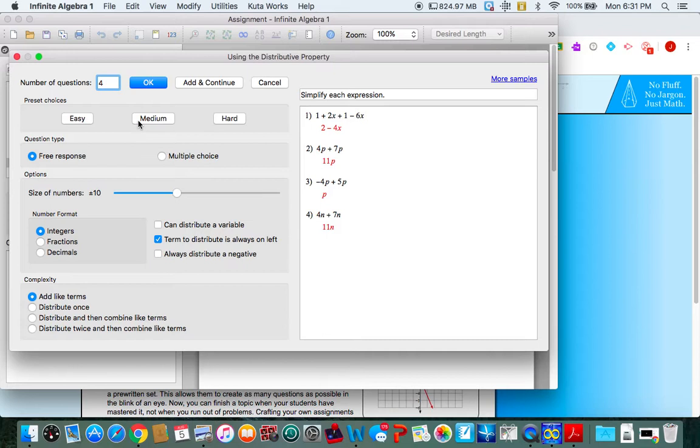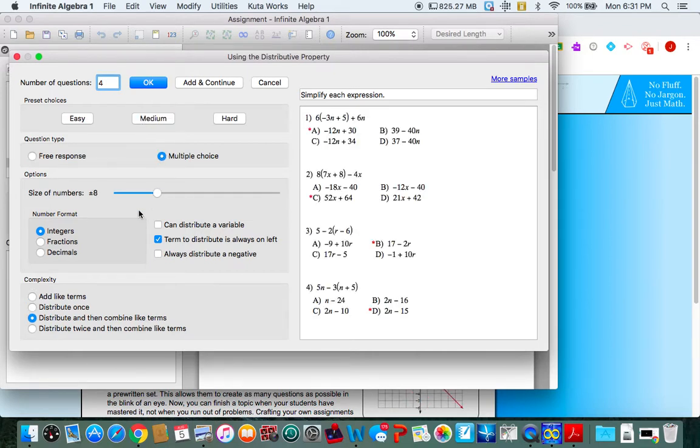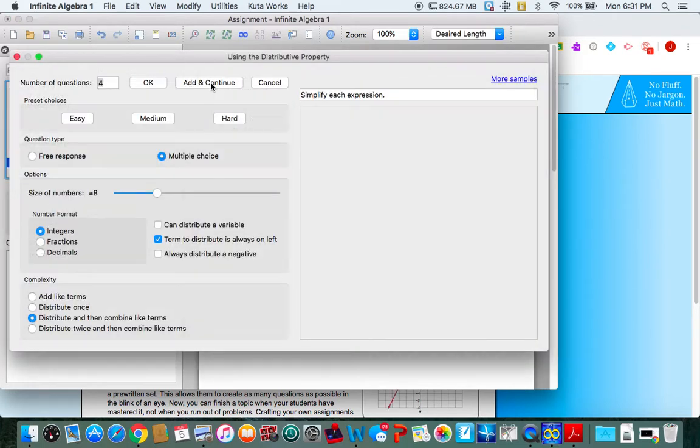I want them to be medium difficulty and I'm going to choose multiple choice. Notice I can choose other options over here and they show me examples here. I'm going to click add and continue because I want to put some more questions on here.